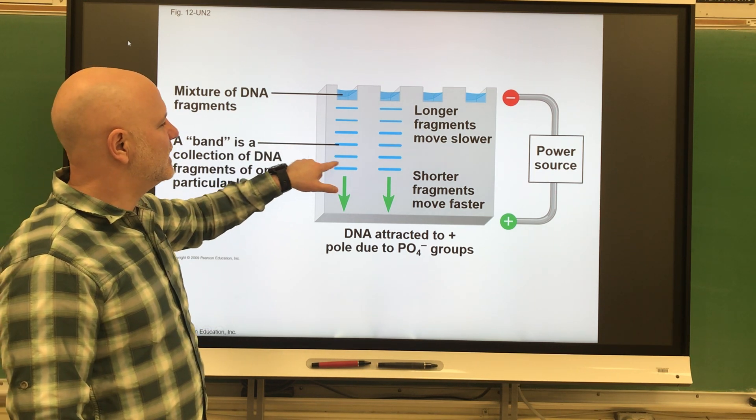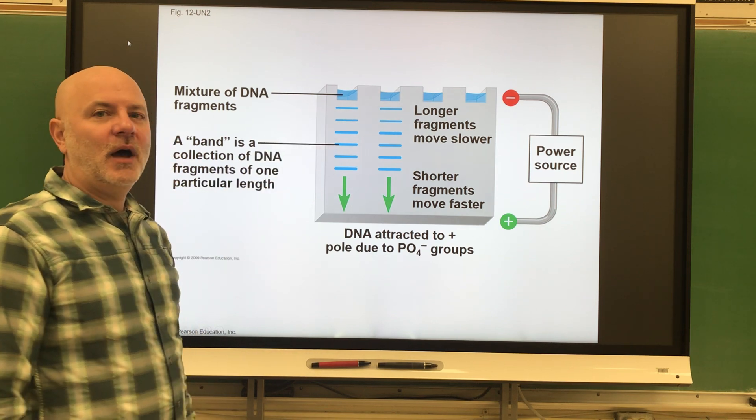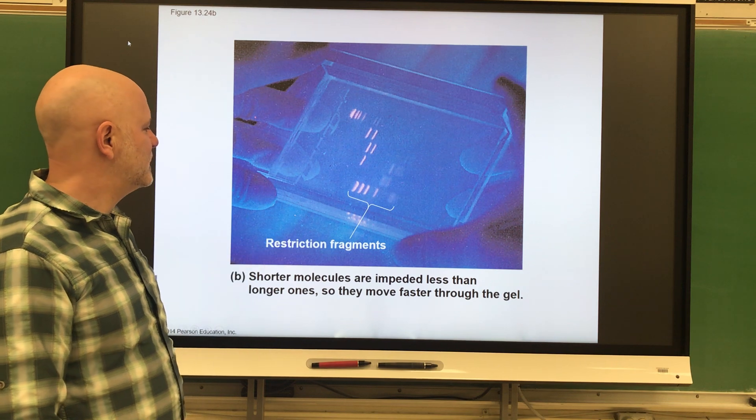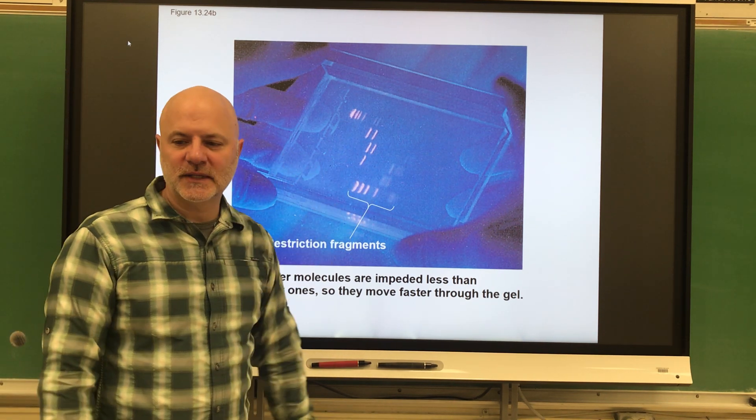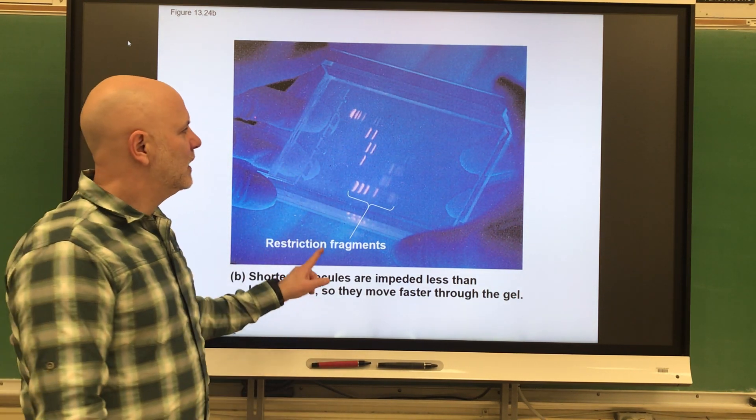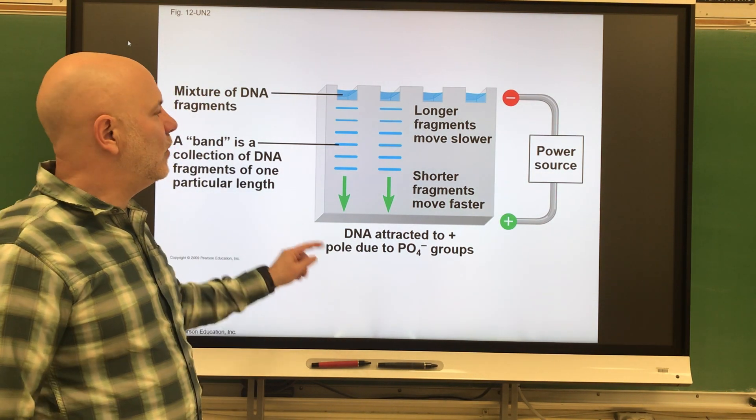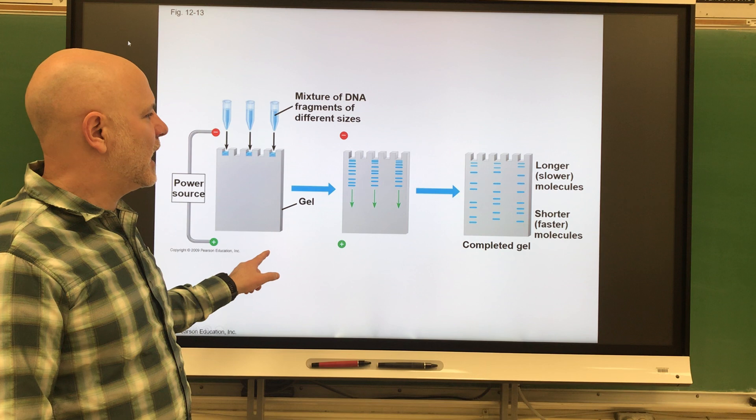What you will see is these little lines show up in the agarose gel. This is showing these little lines that we actually see through a light so we can see this pretty easily. Now, we don't just take DNA and put it in here. What we do to that DNA